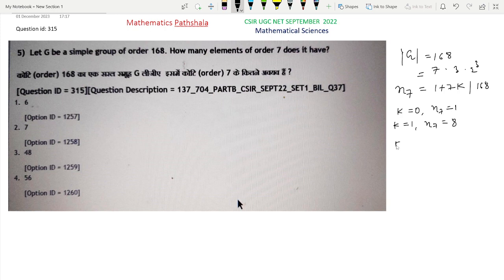If K equals 0, then N7 will be 1, meaning there is exactly one Sylow 7-subgroup, which would be a normal subgroup of order 7. But it is given that G is a simple group, so it does not have any non-trivial normal subgroup. So this cannot happen. The only possibility is K equals 1 and N7 equals 8.